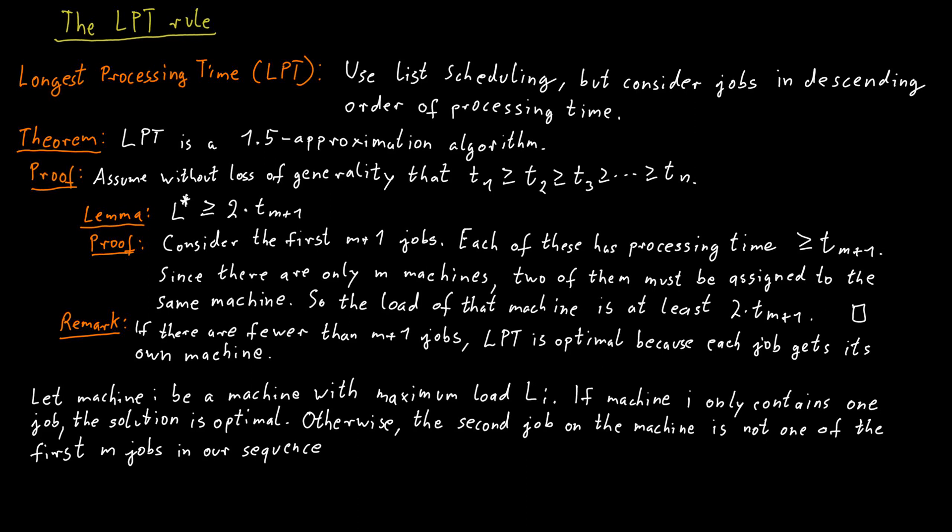So, we can simply split the load of machine i again into the part that we have before the last job j was assigned to that machine, and the processing time of job j itself.